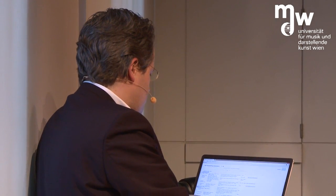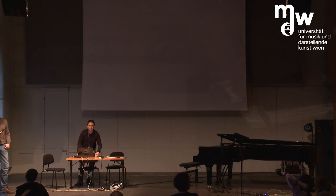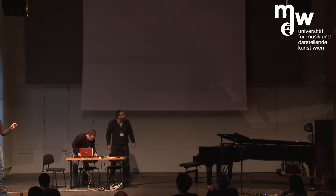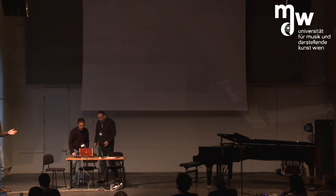So we have MuseScore Image Renderer next. One more hack made with MuseScore. The MuseScore lead developer, Werner, is coming on stage. He has a Linux machine, so hopefully the VGA output will work — it's always challenging. So basically, we got a lot of requests from people asking: is it possible to set up MuseScore in a way that it's putting out images? After all, images are still very important on the internet — look at Pinterest and so forth. So it's quite a thing that people ask.